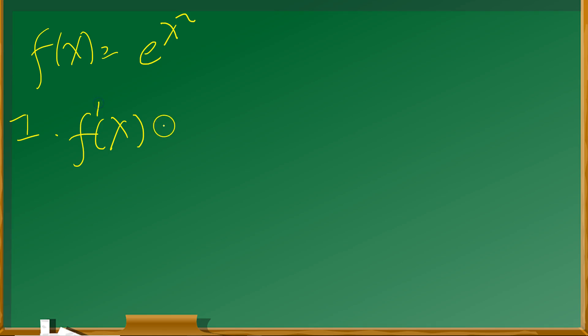It means just copy and put f prime of x, copy that whole thing straight down. So just right here, e to the x squared.